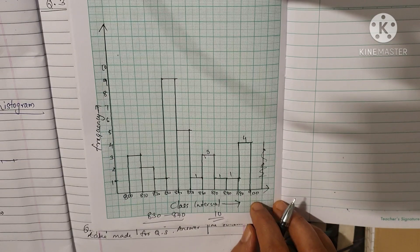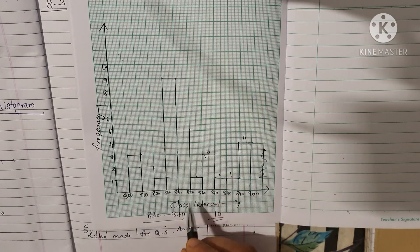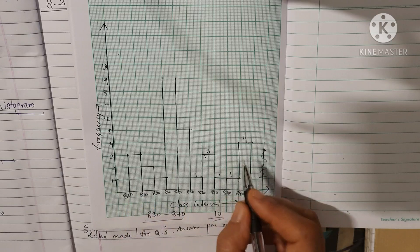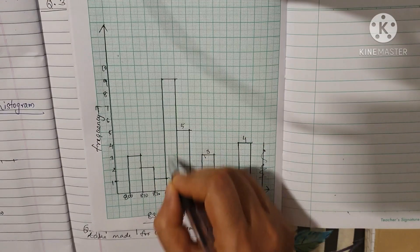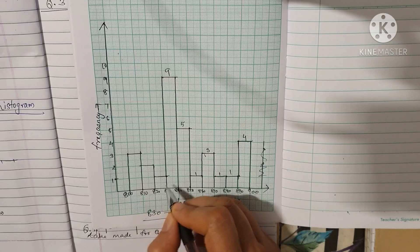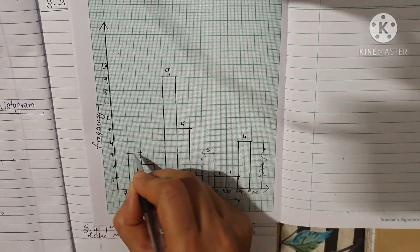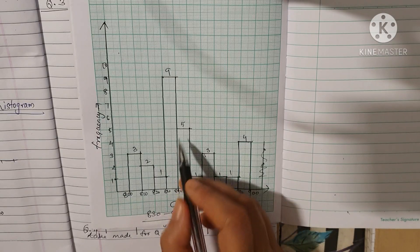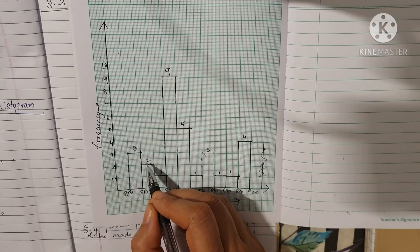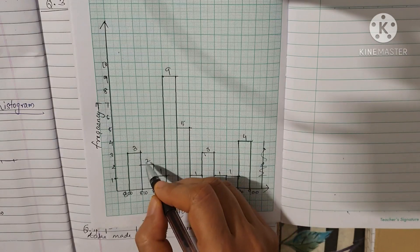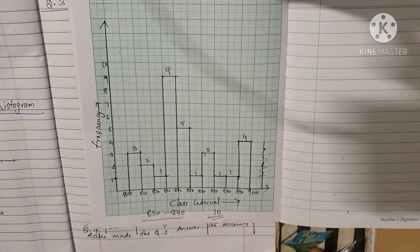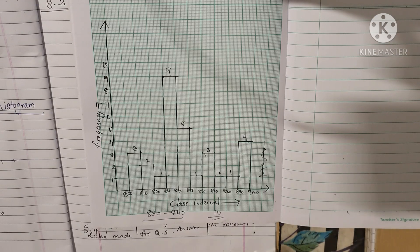Next: how many workers earned less than 850? Below 850 we have frequencies 3, 9, 1, 2, and 5. So 5 plus 9 plus 1 plus 2 plus 3 equals 20. The answer is 20 workers earned less than 850. This completes Question 4. Thank you.